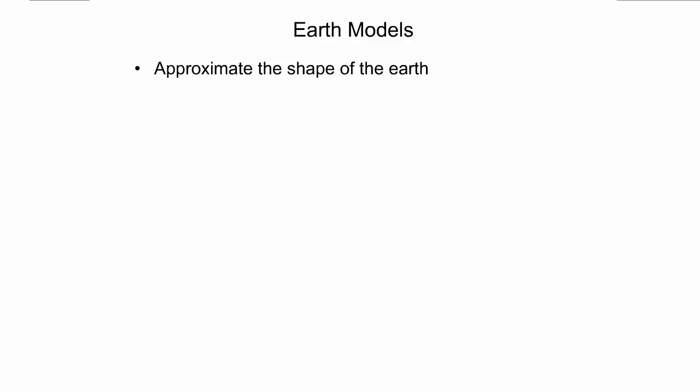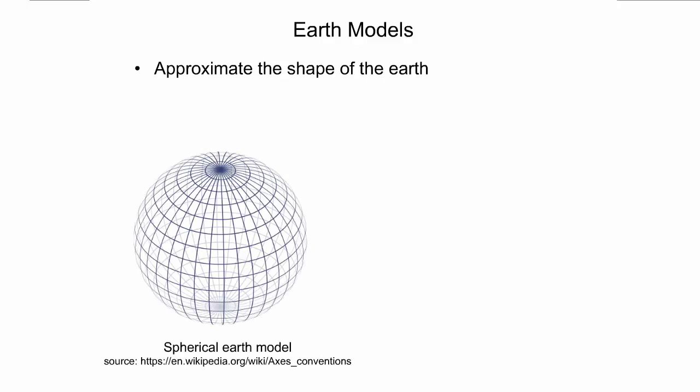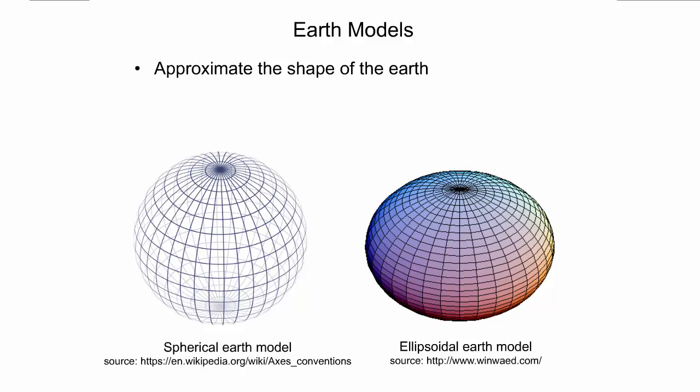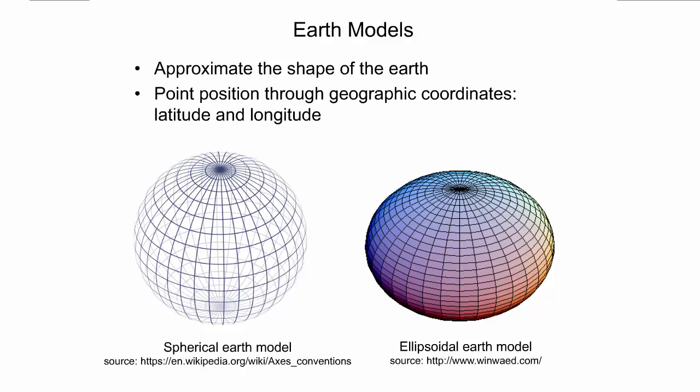To describe a point position on Earth, the Earth's surface is often simplified through a mathematical model. For example, the Earth's surface can be described through a spherical model, as shown to the left, or through a rotational ellipsoid model, shown to the right. In the ellipsoid model, the polar axis is shorter than the diameter of the equatorial circle. In both Earth models, a point position can be unambiguously specified through only two angular parameters, called latitude and longitude. These two angles together are often referred to as geographic coordinates.